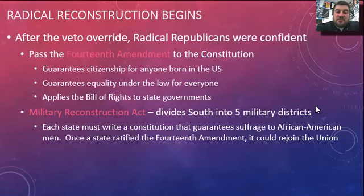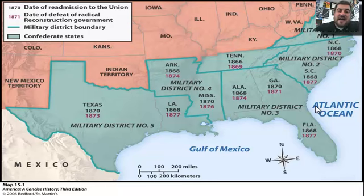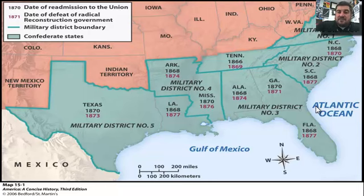Republicans also pass the Military Reconstruction Act, which divides the South into five military districts. Each state must write a constitution guaranteeing suffrage to African-American men, and once the state ratifies the 14th Amendment it can rejoin the Union. The five districts are: Virginia (1), the Carolinas (2), the Southeast (3), Mississippi and Arkansas (4), and Louisiana and Texas (5). Tennessee had already been readmitted before this law passed. A map shows the dates of readmission and when Radical Reconstruction governments were eventually overthrown.